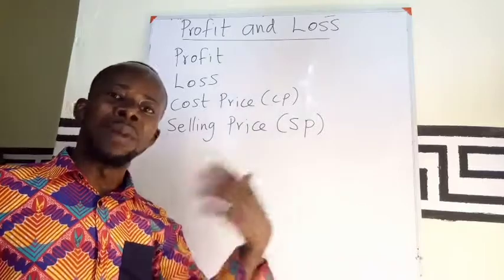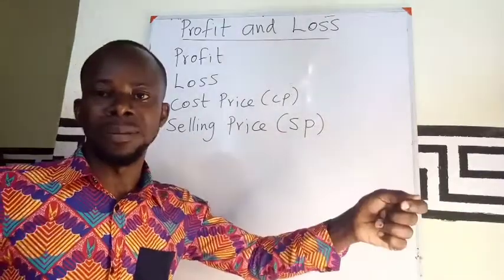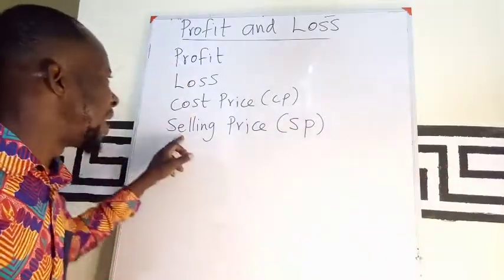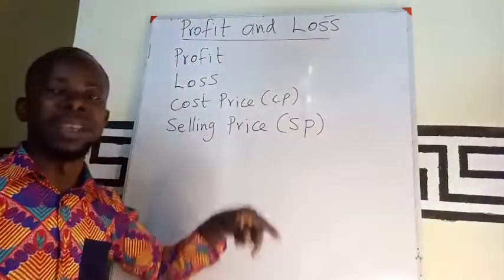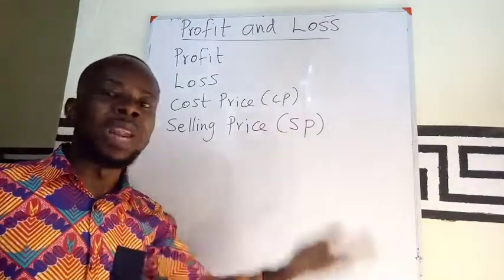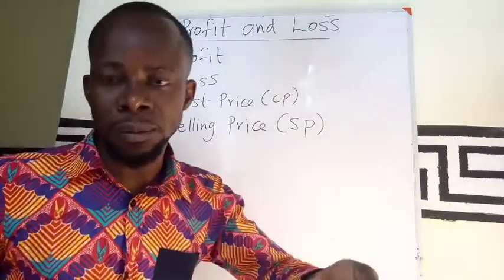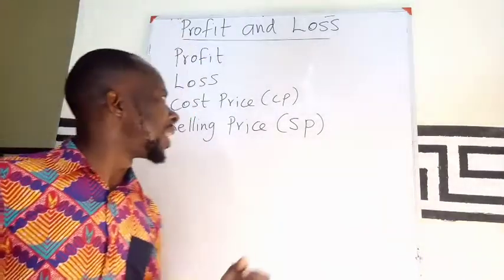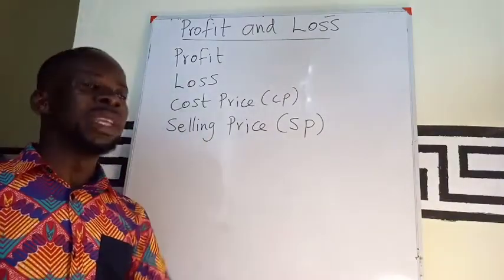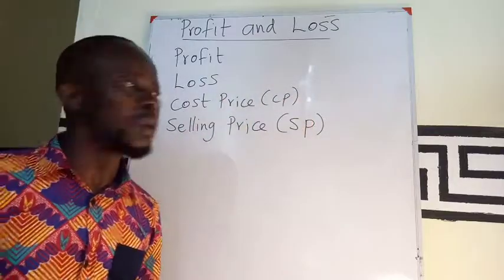Now when I come home and in turn sell that pen at a different price — 6 cedis or 4 cedis — it means I am having a selling price. The selling price of a product is simply the price at which an article is sold. The price at which it is bought or purchased is called the cost price.